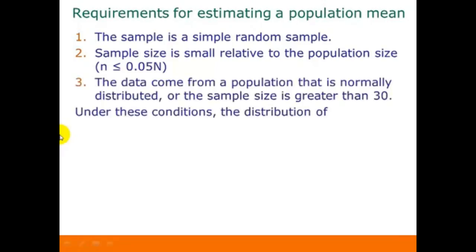Third, the data come from a population that is normally distributed, or the sample size is greater than 30. It has to be one or the other of these two requirements — either the population was normally distributed in the first place, or if not, or if we don't know about the distribution of the population, then the sample size needs to be greater than 30.